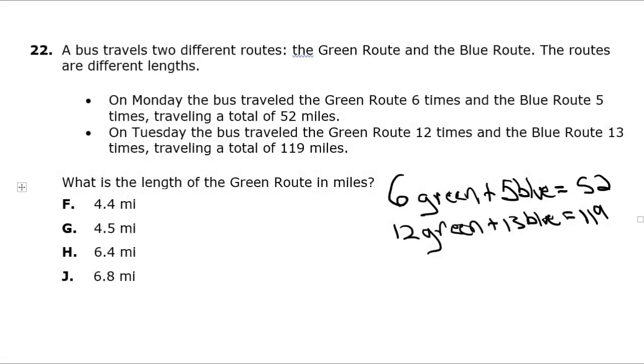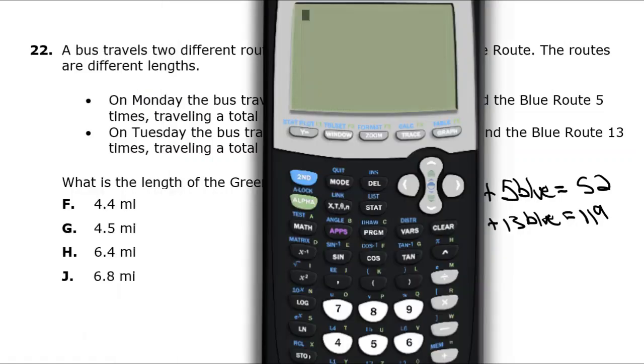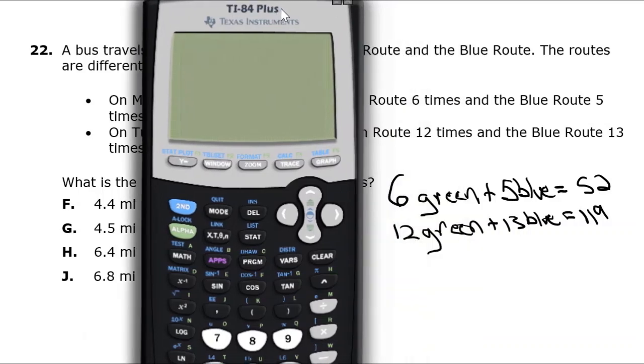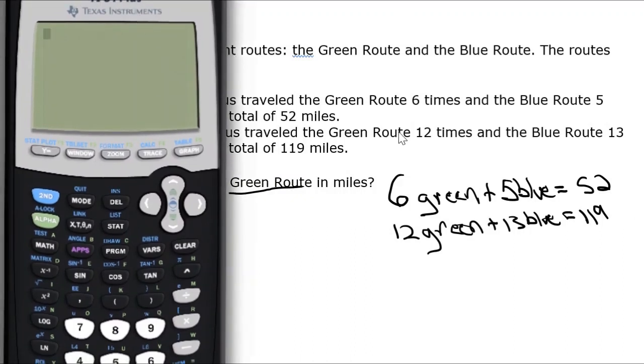We have our two equations. Let's grab our TI-84s again. We're going to do some guess and check. Our first guess is that the green route is 4.4 miles. What we're going to do is put 4.4 in for the green. So 6 times the green, 6 times 4.4 gives us 26.4. And I'm going to rewrite the equation in this spot right down here. So 6 times 4.4 was 26.4.